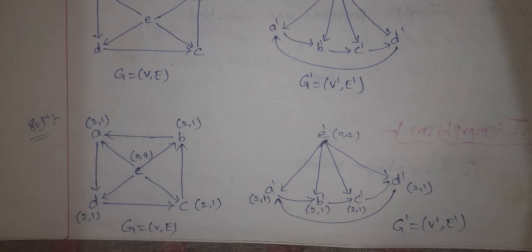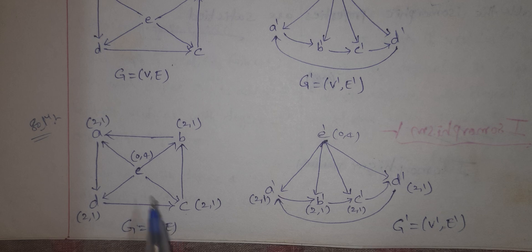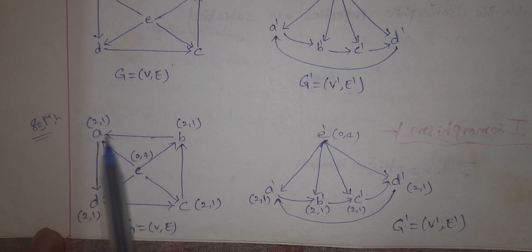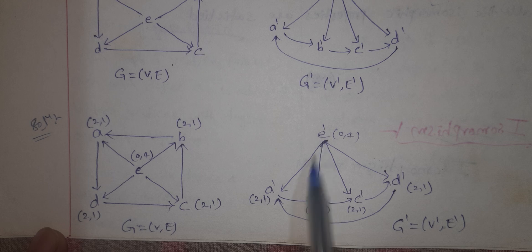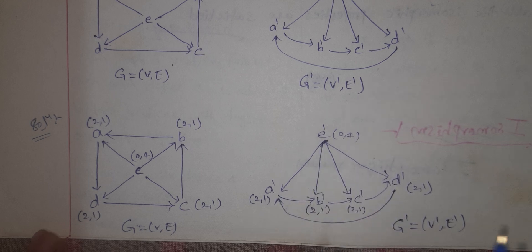Let's see the inputs and outputs. Graph G has five vertices: a, b, c, d, e. Graph G dash also has five vertices: a, b, c, d, e. So the number of vertices is equal — condition one is satisfied.